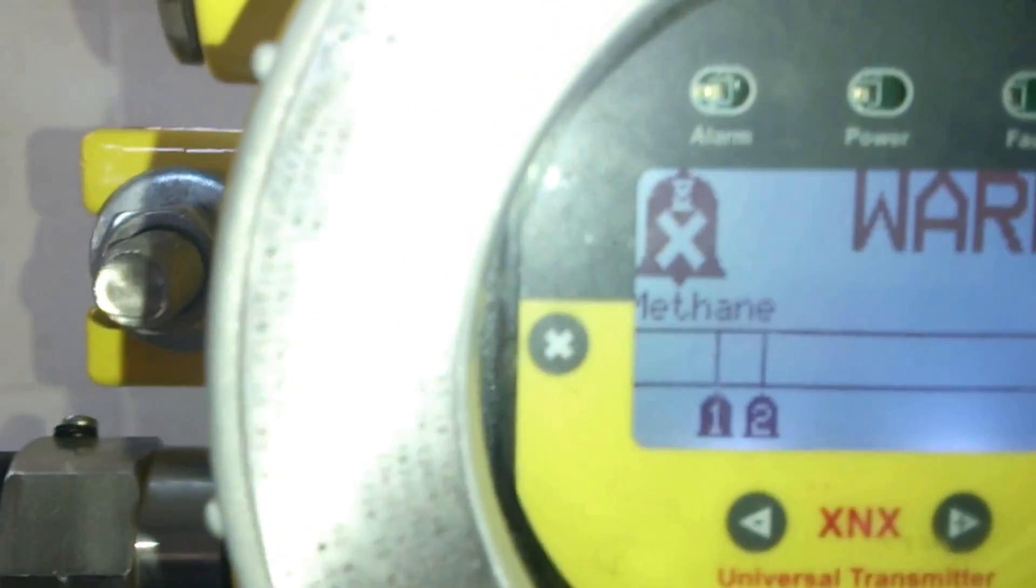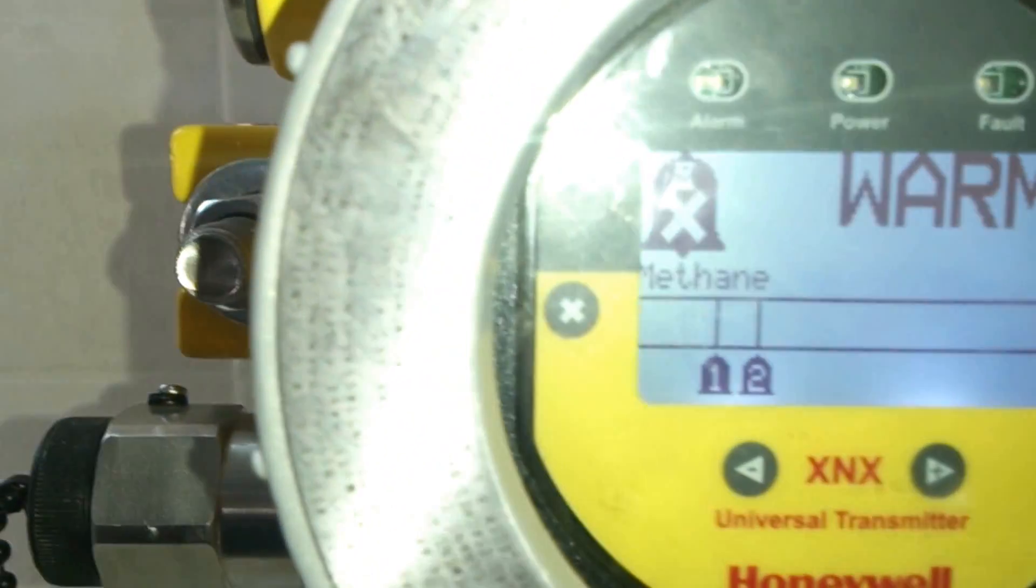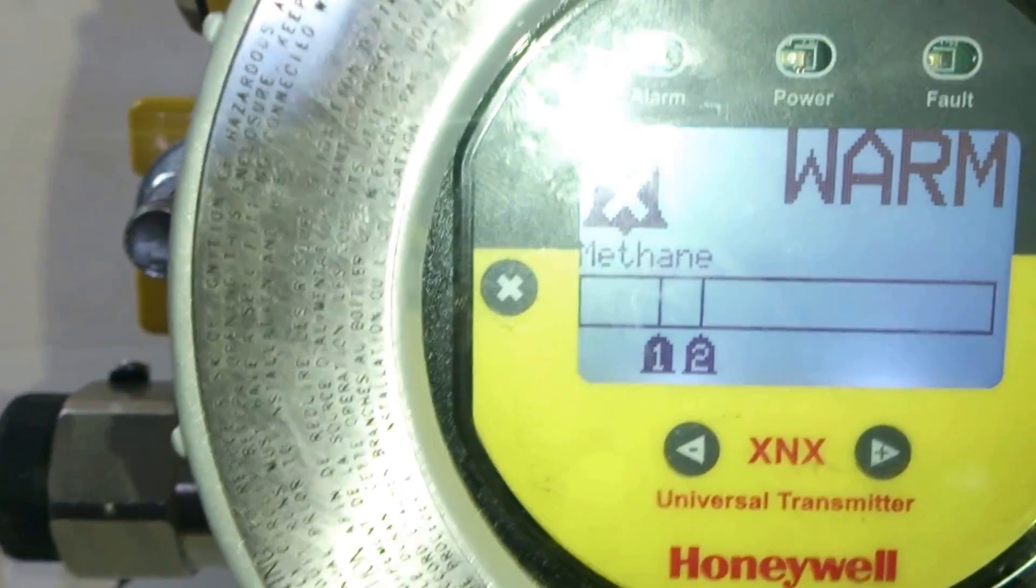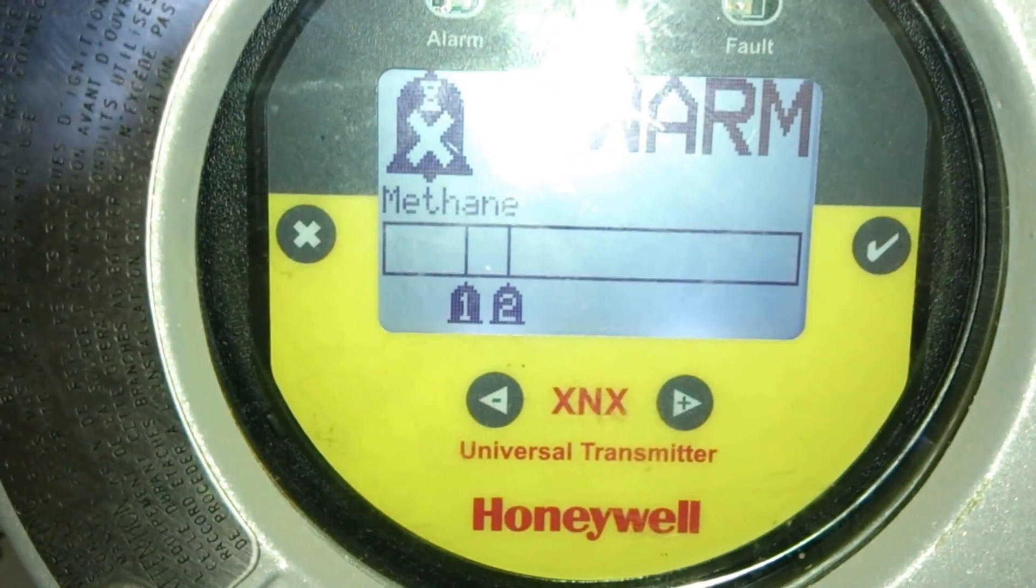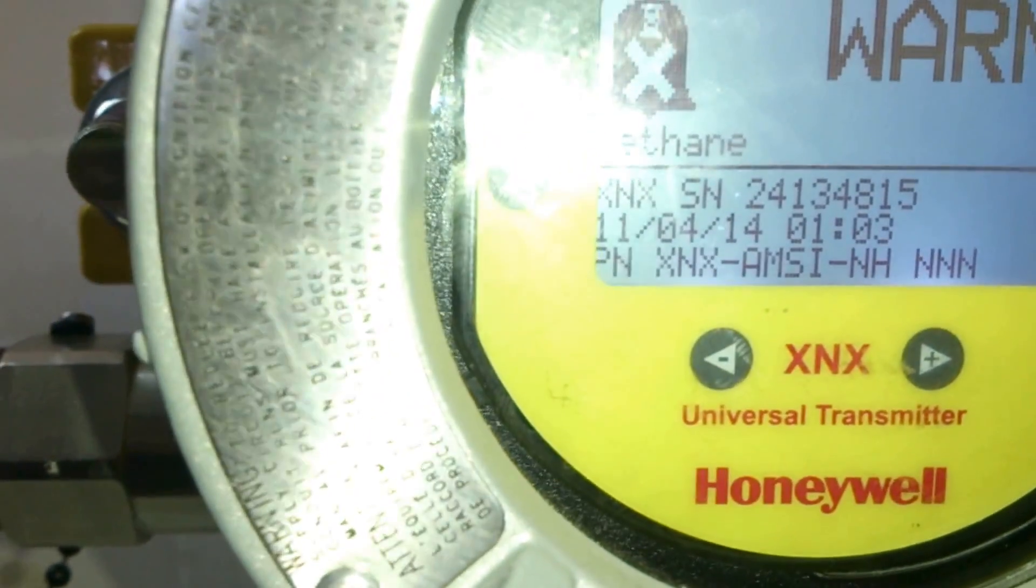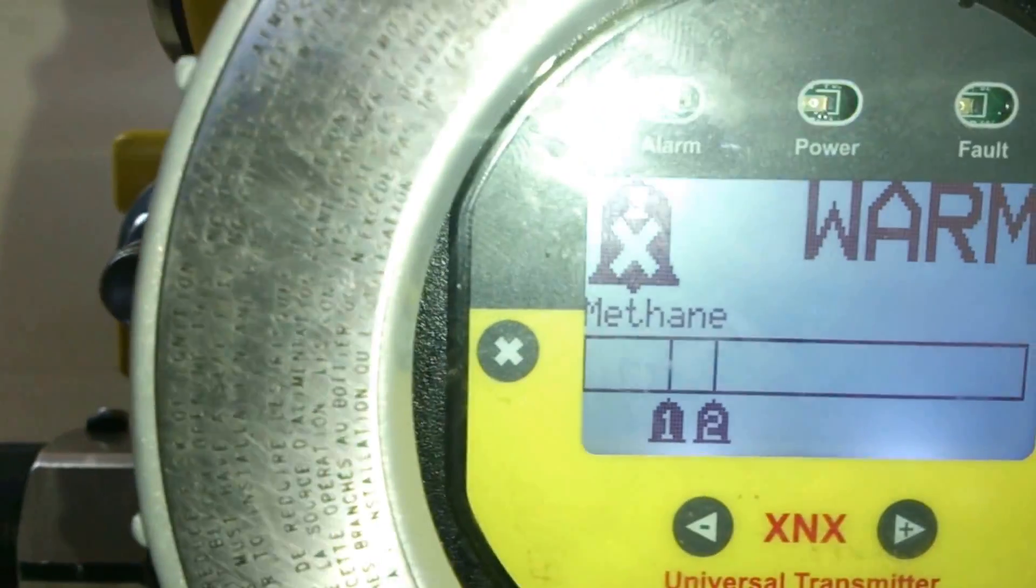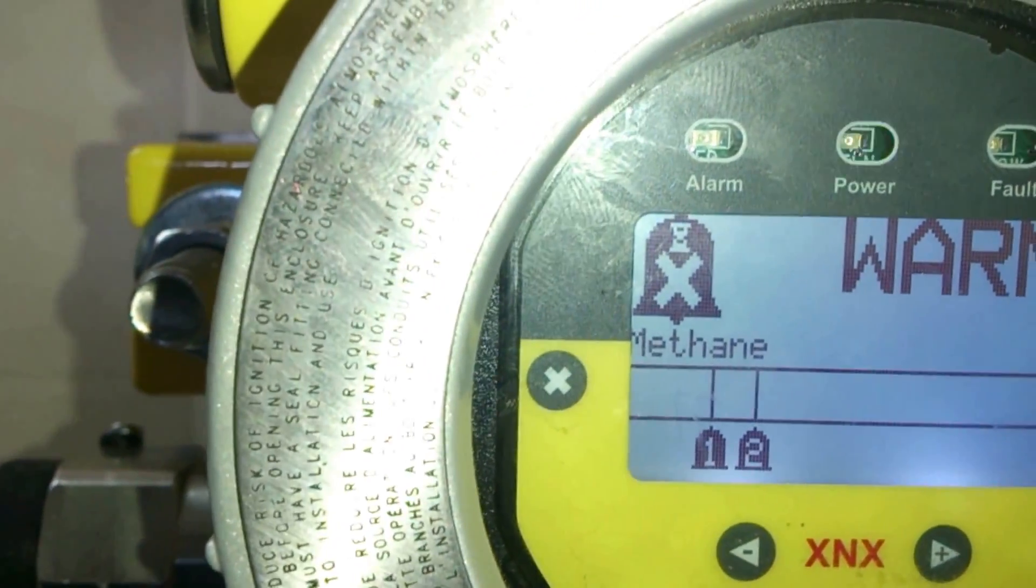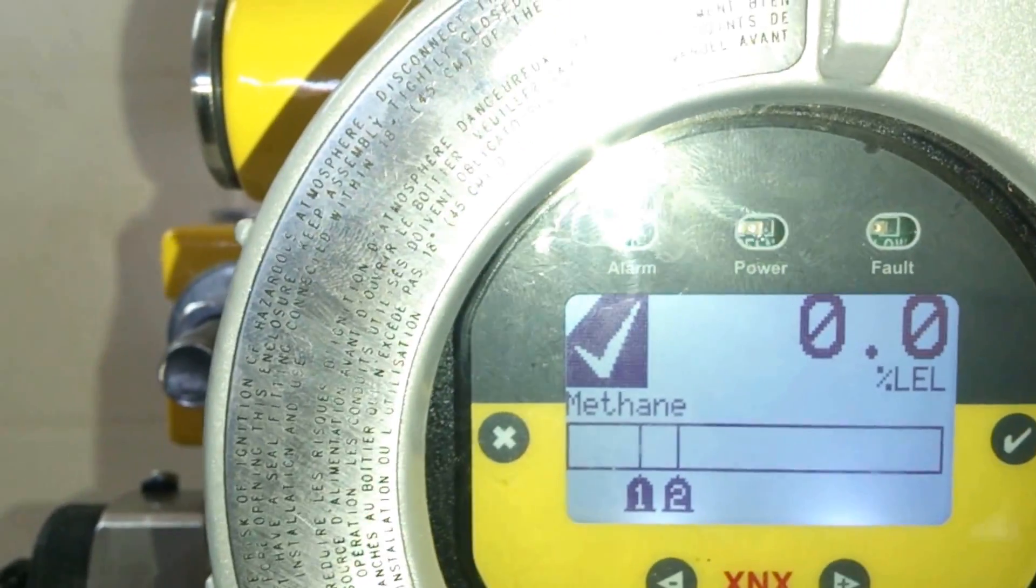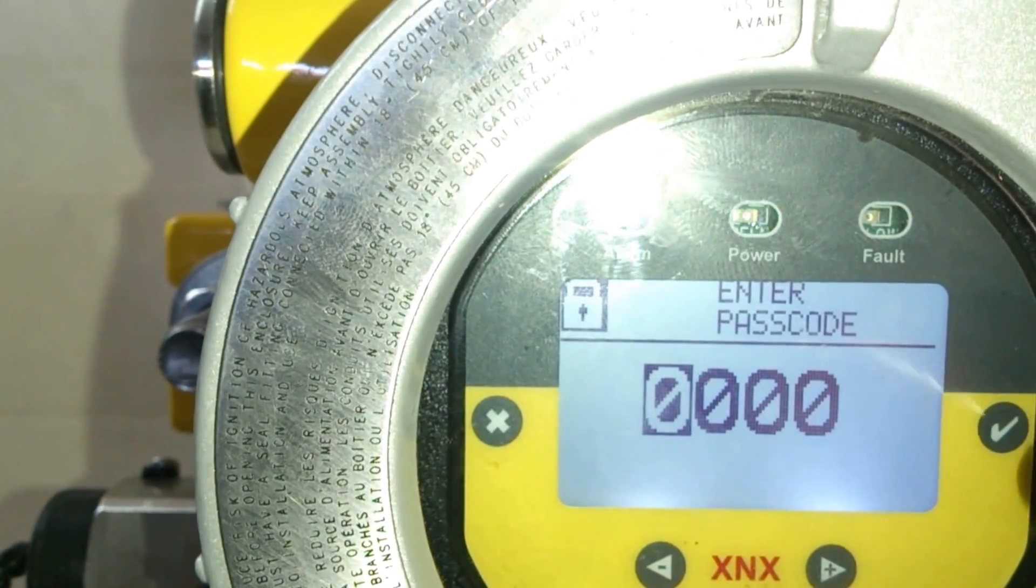The front panel of the XNX transmitter has an alarm indicator, a power indicator and a fault indicator. On the left it has an X mark to go back to the previous menu or cancel, and on the right we have a tick mark to select options. At the bottom we have minus and plus toggle keys which are used to increase or decrease values or to toggle between options. Once the warm up procedure is done we enter into the menu by selecting the tick mark. We enter the passcode that is 0000.